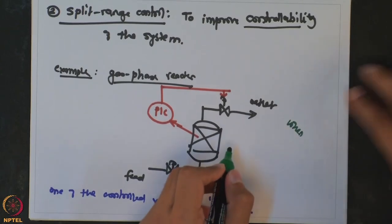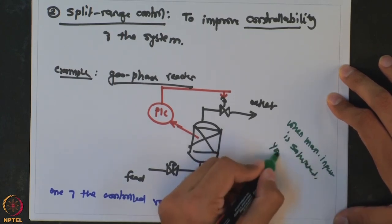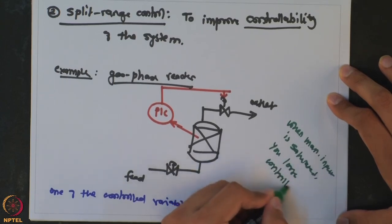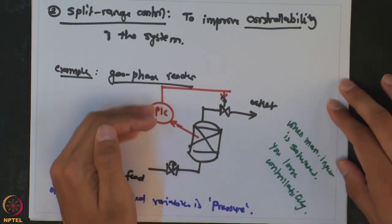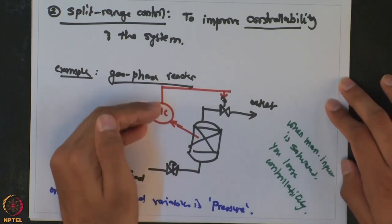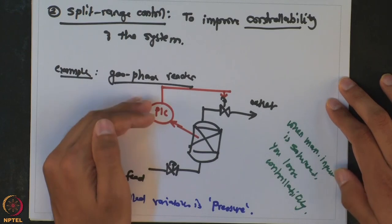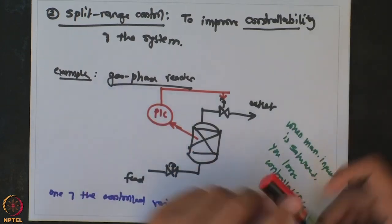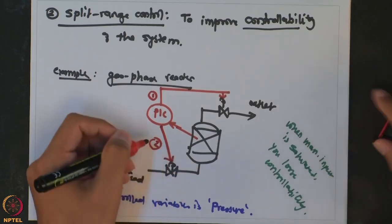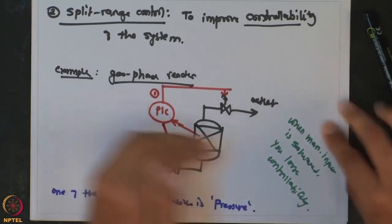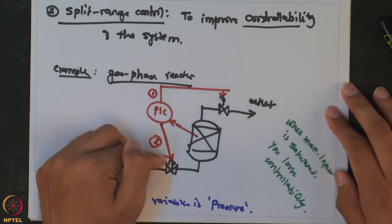When the manipulated input is saturated, the controller can no longer do anything to prevent pressure buildup. Another way to improve the response in such a situation is to cut down the feed — reducing reactant input reduces the reaction rate and vapor generation. So along with the outlet valve, if I also manipulate the inlet valve, as the outlet valve is saturated I can start cutting down the feed flow to ensure safety.